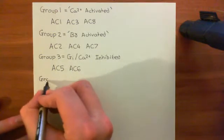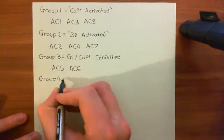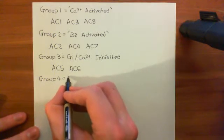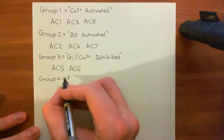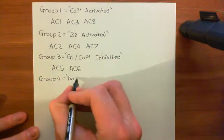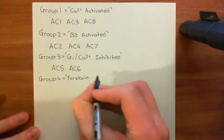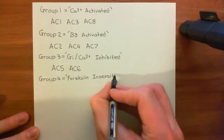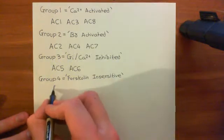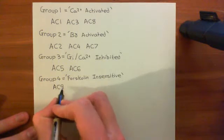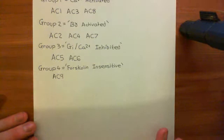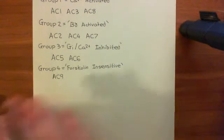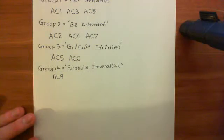Group four adenylyl cyclases has only one member, and its colloquial name is the forskolin-insensitive adenylyl cyclases. Most adenylyl cyclases will be activated by the drug forskolin, turning the inactive adenylyl cyclase into the active form. However, adenylyl cyclase 9 is forskolin-insensitive, so it will not be activated by exposure to forskolin. That completes the classification of the nine forms of adenylyl cyclases.